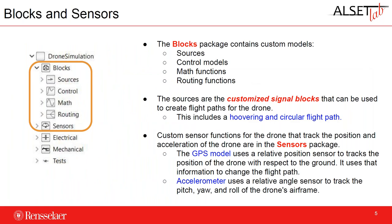This is what our drone simulation library looks like. On the left we have the blocks, which contain our sources, control functions, mathematical functions, and routing functions — these are all customized signal blocks we can use to create flight paths for the drone. We also have custom sensor functions that can track the position and acceleration of the drone in the sensors package. For example, we have a GPS model which uses the relative position of the drone to track its position with respect to ground, and an accelerometer that checks the relative angle of pitch and roll of the drone's airframe.